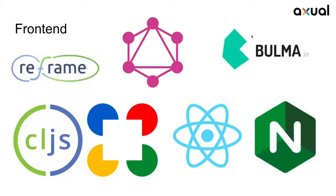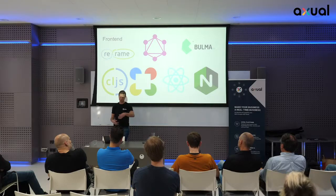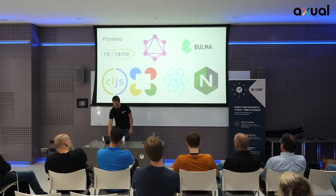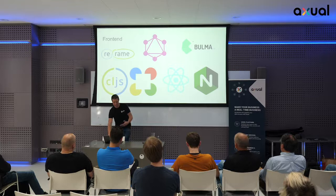The frontend uses ClojureScript with the reframe library, which wraps React. All your state is in one place, and based on the state the view is generated, which makes it really easy to do things. I also use regraph, a tiny library that makes reframe easy to work with GraphQL — it makes subscriptions and queries really easy. It's all served by nginx as a static container.